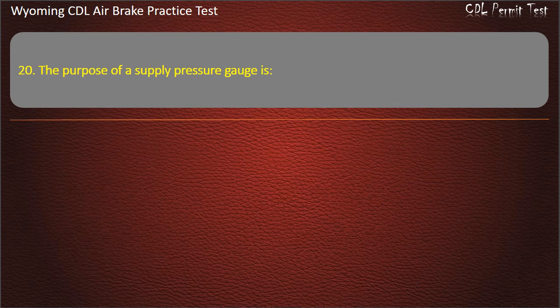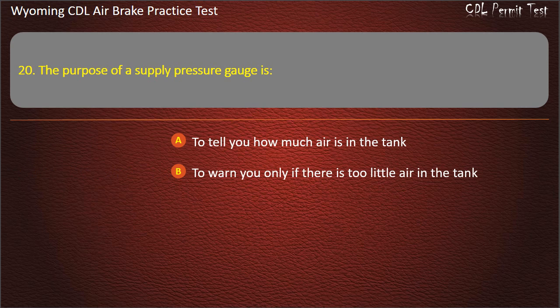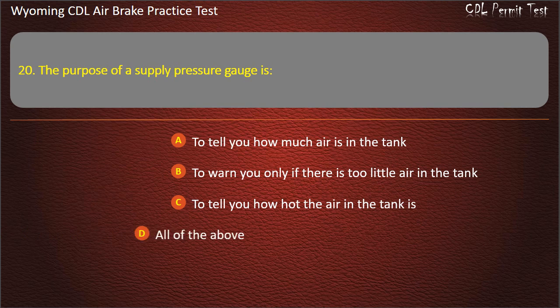Question 20. The purpose of a supply pressure gauge is: to tell you how much air is in the tank; to warn you only if there is too little air in the tank; to tell you how hot the air in the tank is; all of the above. Answer: To tell you how much air is in the tank.